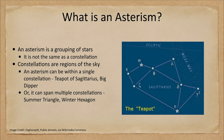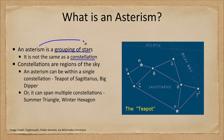So what is an asterism? Well, an asterism is a grouping of stars. Now you may think a grouping of stars — well, that's a constellation. However, the two things are quite different and an asterism is not a constellation.